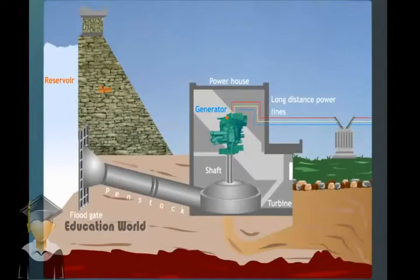A dam is built across a large river to hold back the river water and raise its level to form a reservoir. At the bottom of the dam, there is a floodgate.